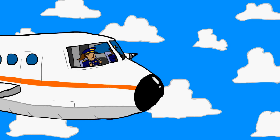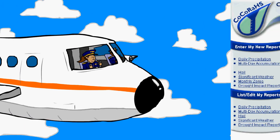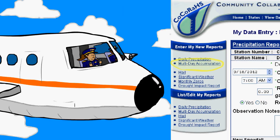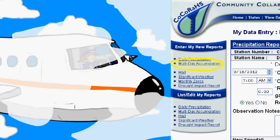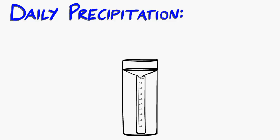If your schedule doesn't allow for you to collect a measurement every day, there is a separate data entry form for entering multi-day reports. When we measure daily precipitation, we measure to the nearest hundredth of an inch.